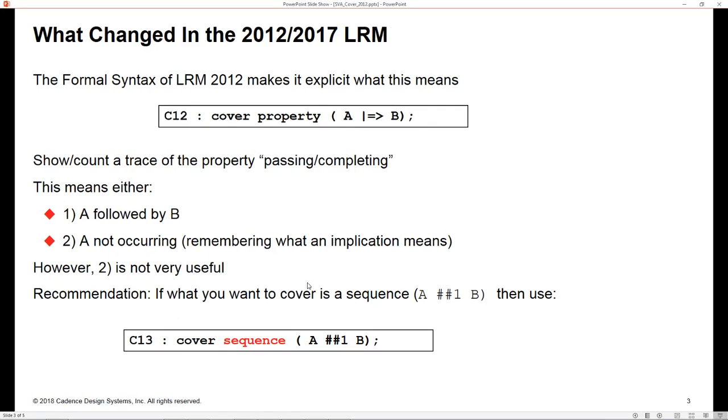If you actually wish to observe what you really meant in the first place, you'd have no option but to use cover sequence A followed by B, then you'll get exactly what you desired. Basically, you're really giving yourself a problem for the future if you write a cover property with implication in it from now onwards, and unfortunately you have that problem in legacy code if you already have properties like this. So I advise you to change any property that has implication in it to ## 1 instead when the need and the time arises.